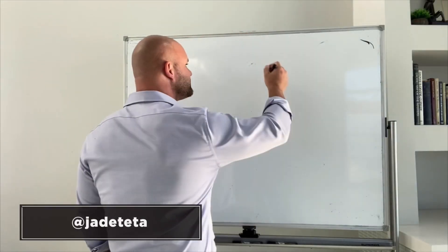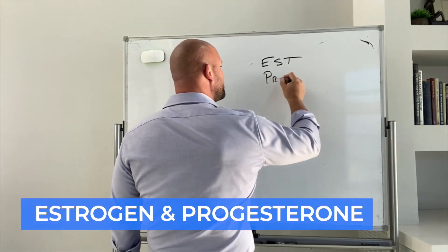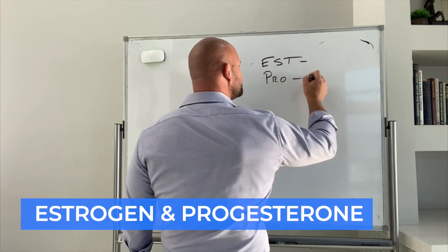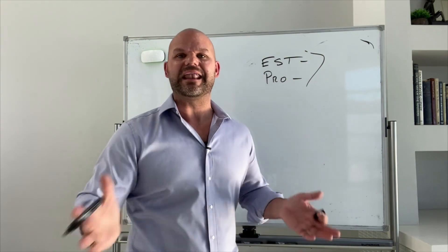The normal female menstrual cycle adjusts throughout the month in terms of the amounts of estrogen and progesterone. Now, the way that I like to describe estrogen and progesterone as two twin sisters, twin sisters, but non-identical.